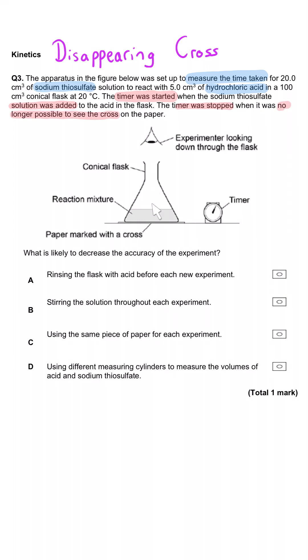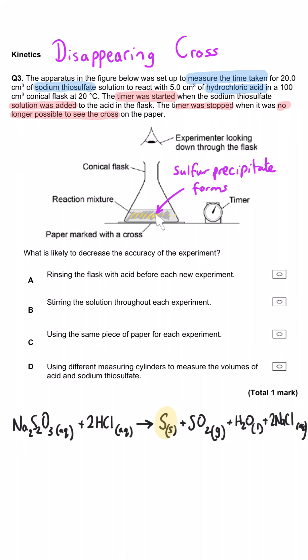You can see here is the experimenter looking down through the conical flask at where the cross was marked on a piece of paper. The reaction mixture is in here. This is a reaction that produces a precipitate of sulfur and that obscures the cross, so it doesn't really disappear but we can't see it.